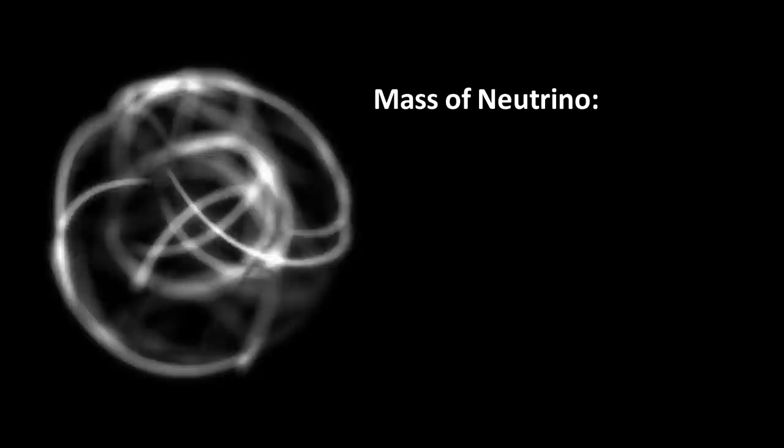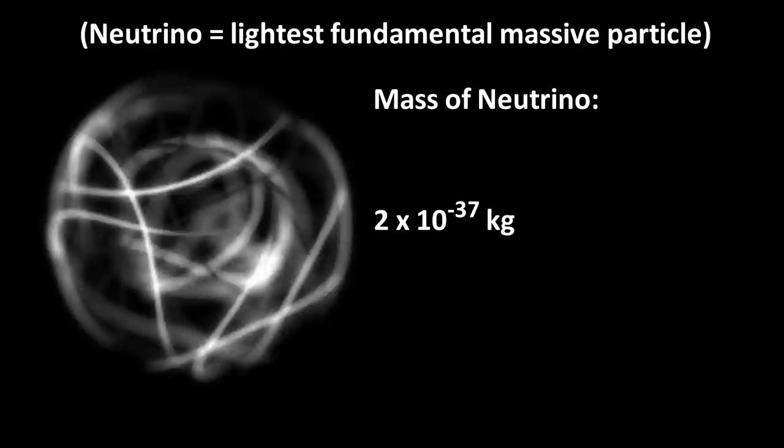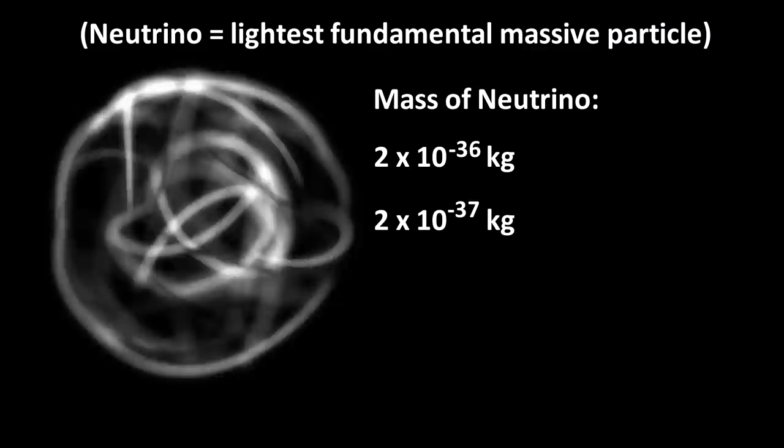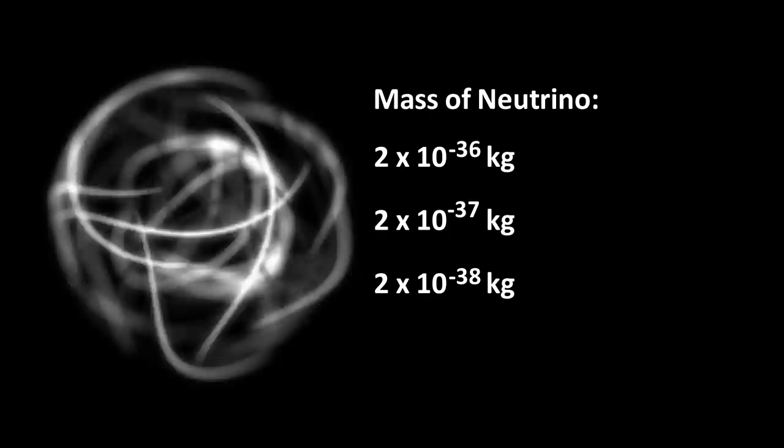And many scientists point out that some of these are so finely tuned that even a slight variation would have resulted in a universe devoid of life. They point out, for example, that the mass of a neutrino is about 2 times 10 to the negative 37 kilograms. It has been shown that if this mass was off by just one decimal point, that is, if it was 2 times 10 to the negative 36 kilograms, or 2 times 10 to the negative 38 kilograms, life would not exist.